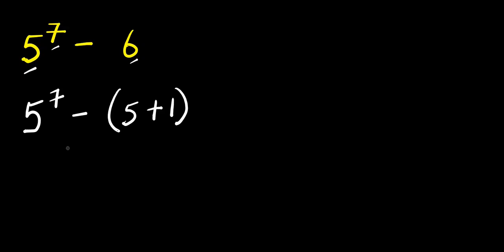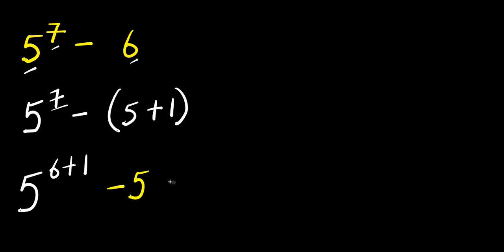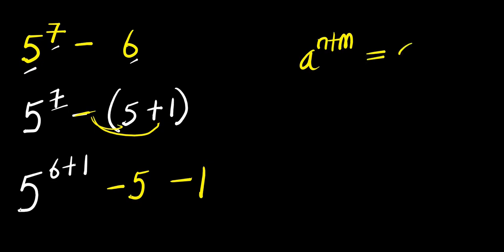From here I can also express 7 as the summation of 6 plus 1. So I have 5 to the power of 6 plus 1, then I can expand using the minus — this will be minus 5 and also minus 1, because this minus multiplies both terms. Remember: if you have a to the power of n plus m, that equals a power n times a power m.